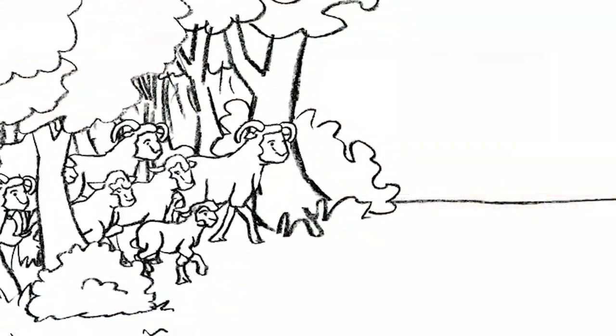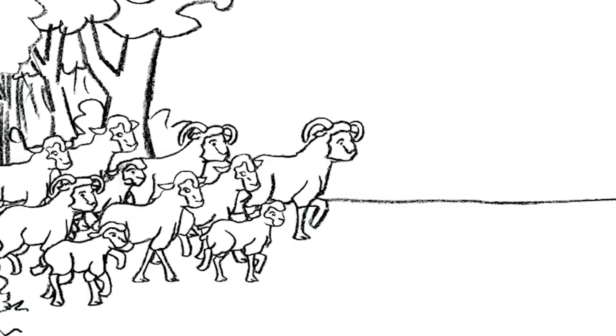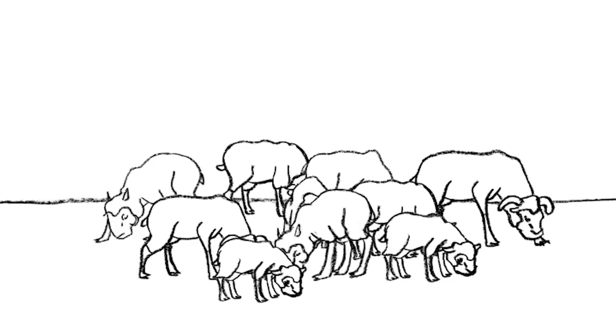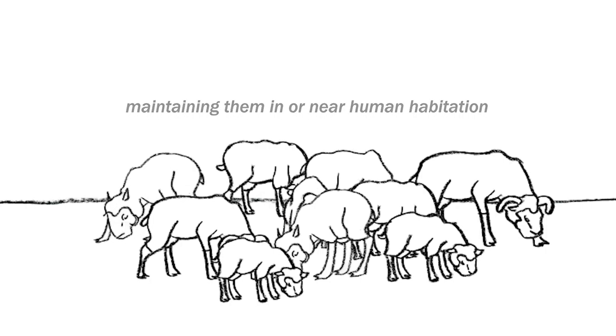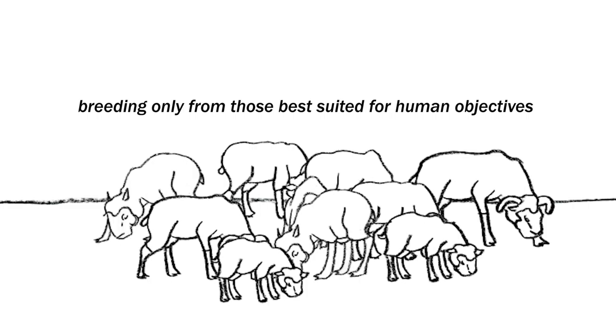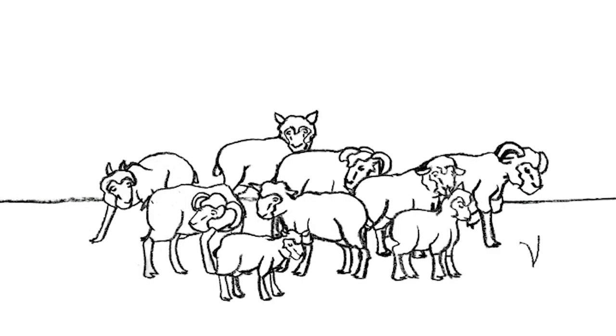Sheep. Once they were wild, but now most are domesticated. Scientifically speaking, domestication is a process whereby humans modify certain species of wild animals physiologically and behaviorally and turn them into something else. By maintaining them in or near human habitation and by breeding only from those best suited for human objectives. The domestication of wild animals started about 10,000 B.C., as far as we know.